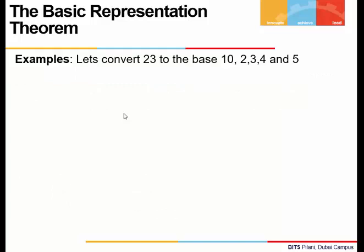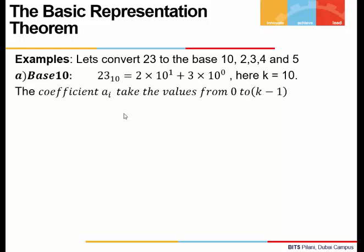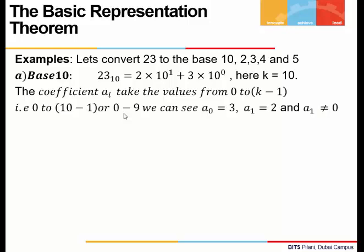Let's see an example. What if we want to convert 23 to different bases? The theorem says that any integer can be expressed to any base, or in other words, any integer can act as a base to represent some number. Here we take 23 and we'll try to represent 23 to different bases: 10, 2, 3, 4, and 5.